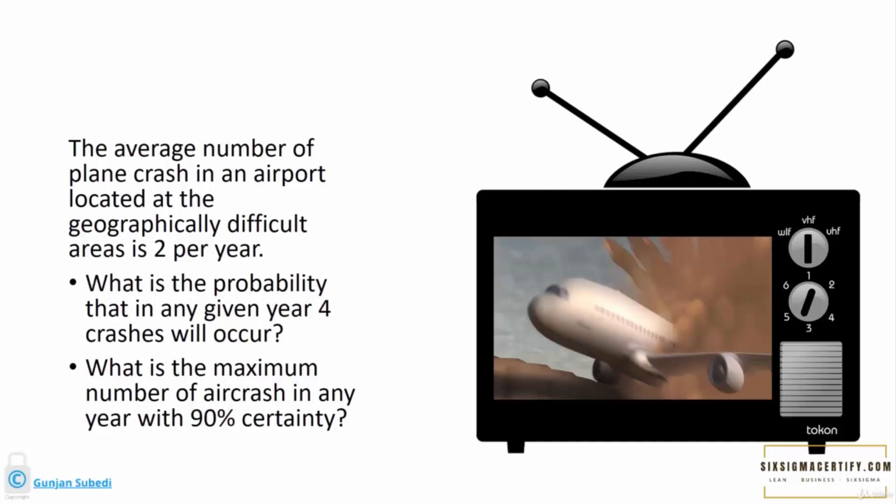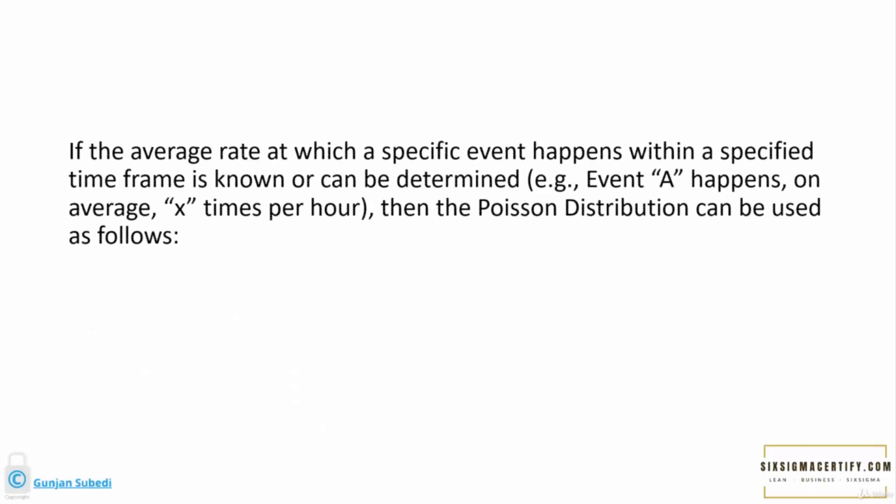For this example, we will be using the Poisson distribution. How can the Poisson distribution be used? If the average rate at which a specific event happens within a specified time frame is known or can be determined—for example, event A happens on average x times per hour—then the Poisson distribution can be used as follows.